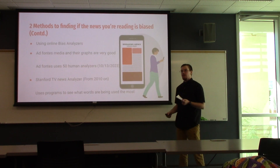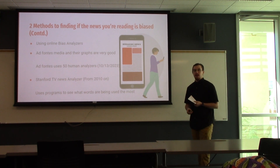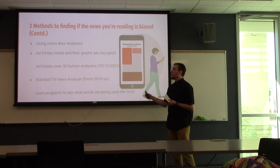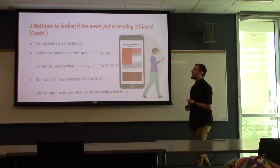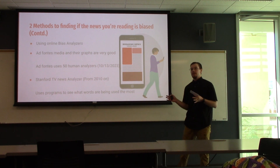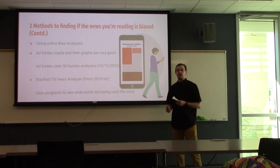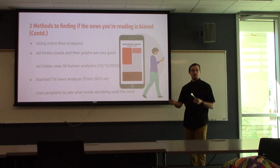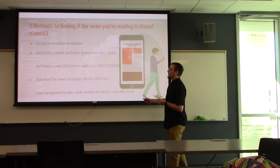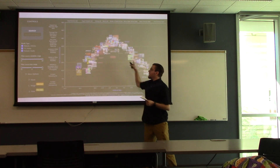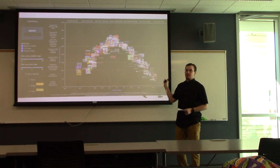The second method to find media bias is the use of a media bias analyzer. Ad Fontes Media — already referenced — is a great way to look at media bias through the eyes of 50 different people, as of October 13, 2023. The Stanford TV News Analyzer is a program written by Stanford to read news 24/7 and find out which words are the hottest — the key words being used by our media. Here is the Ad Fontes graph. You can see CNN on the left side, which is liberal, and Fox News on the right side, which is conservative.